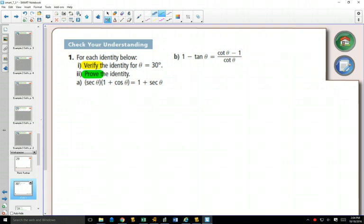When you have a question like in part A it says verify that the identity for theta equals 30 degrees, they just want you to check that it's true when the angle is 30 degrees. So what does that mean? You still set up your line, you can still label this is my left side and this is my right side.